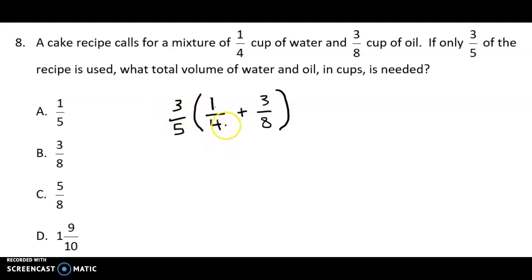We'll start by doing what's in the brackets. In order to add two fractions, we need a common denominator. Looking at the denominators, we've got 4 and 8, so a common denominator would be 8.